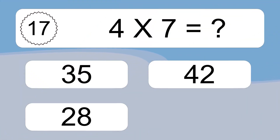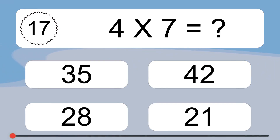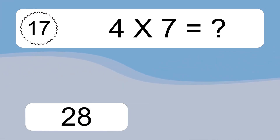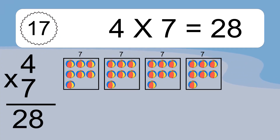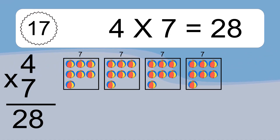4 times 7 equals what? 4 times 7 equals 28. We have 4 boxes, and each box has 7 colorful balls inside. If you count all the balls in all the boxes together, you will have 4 times 7 balls. This equals 28 balls.